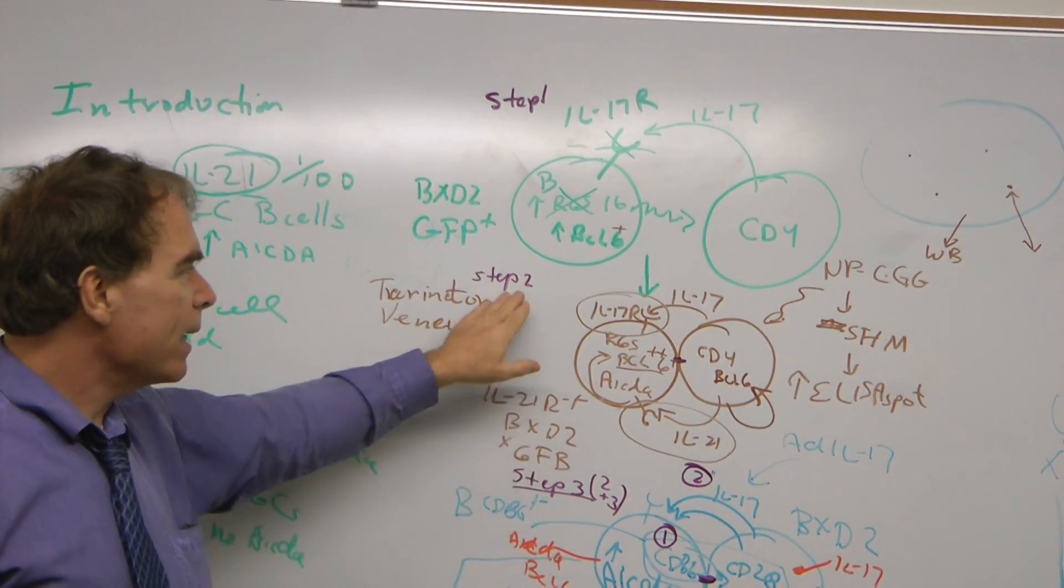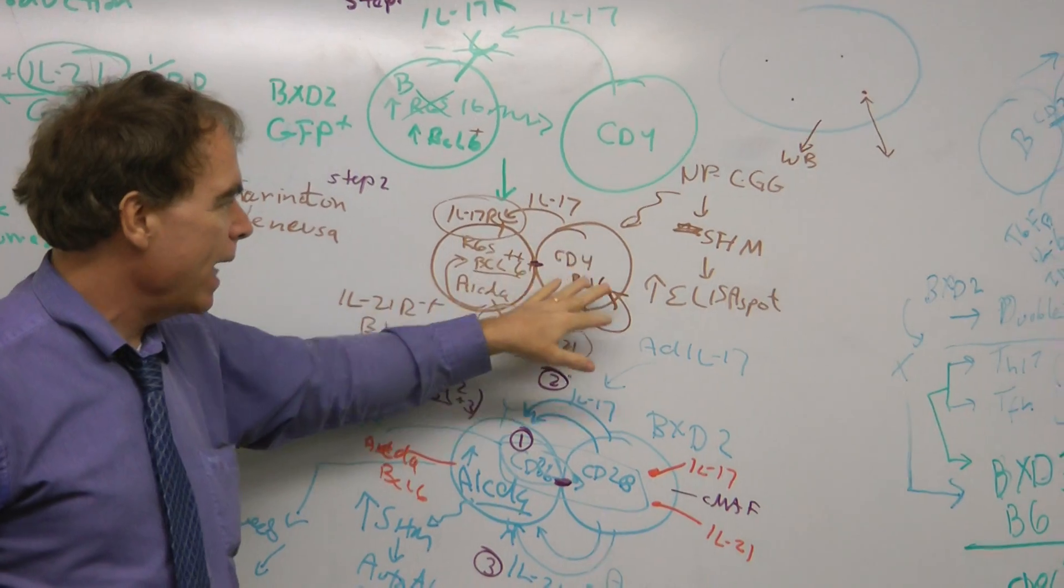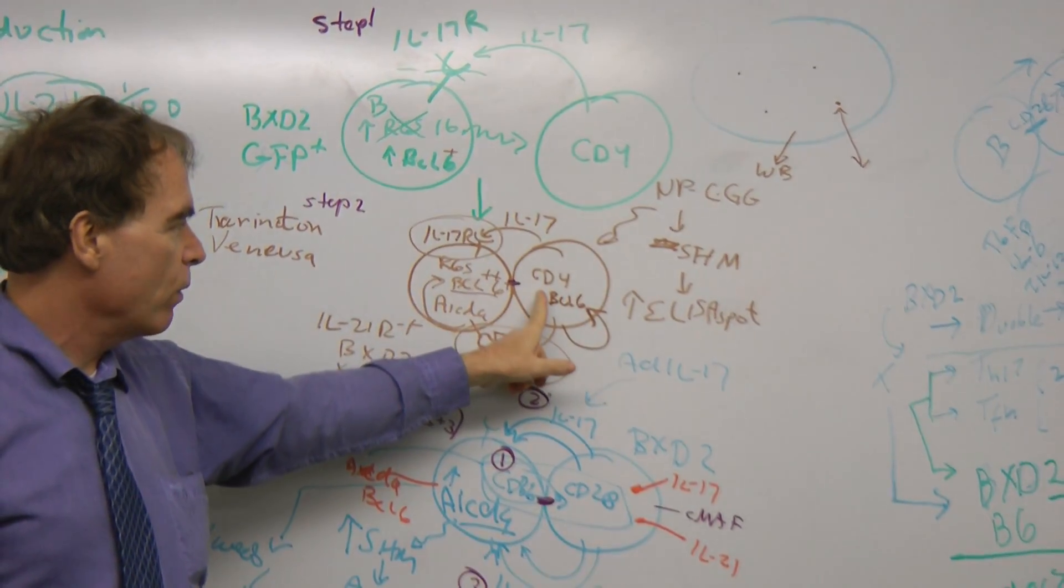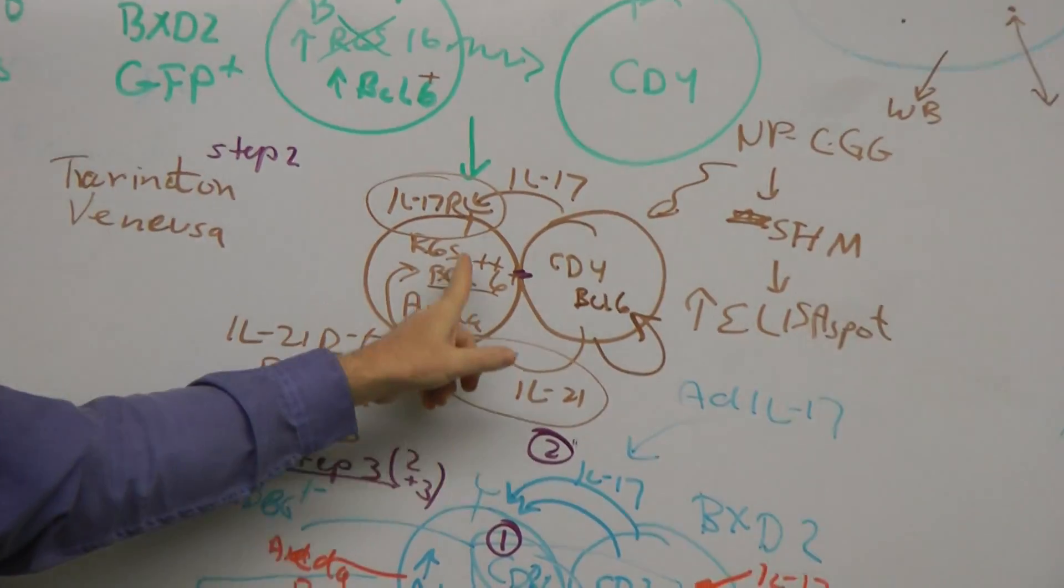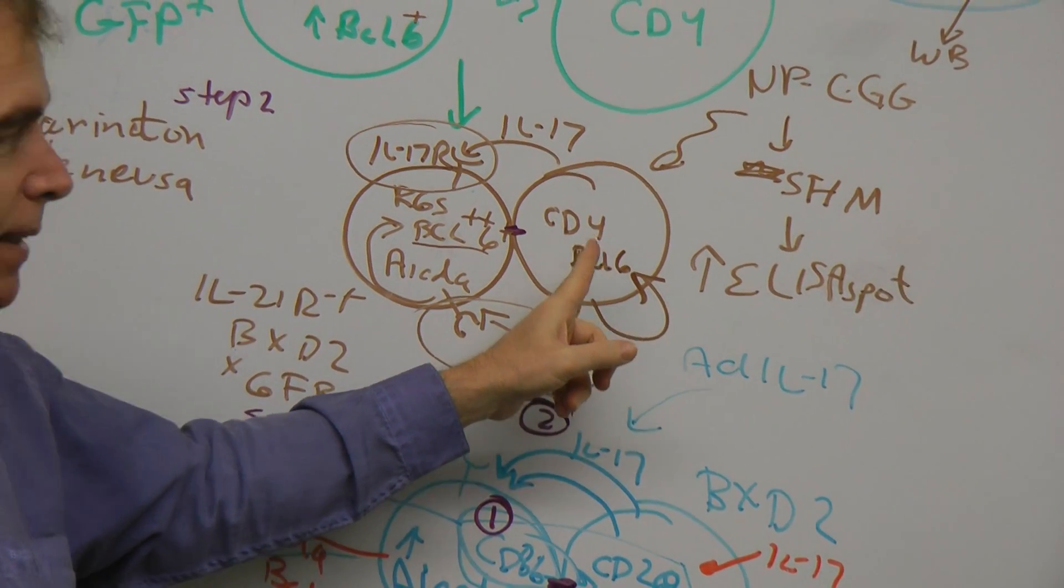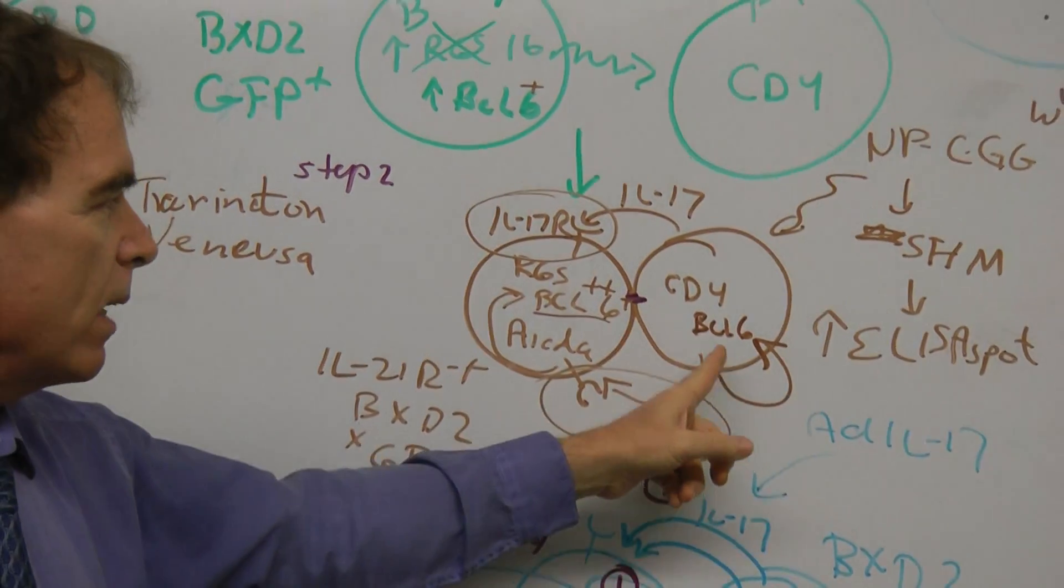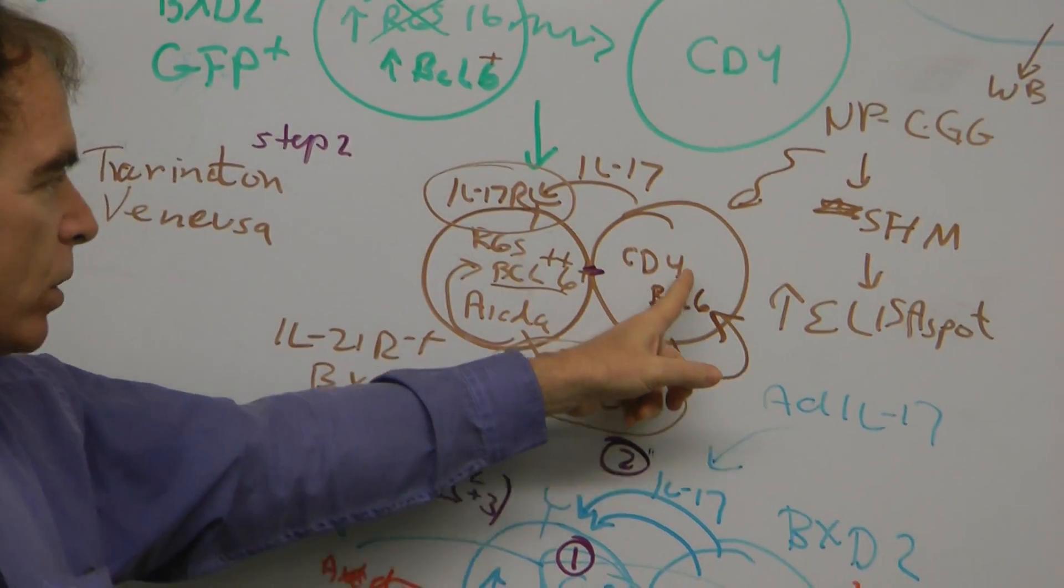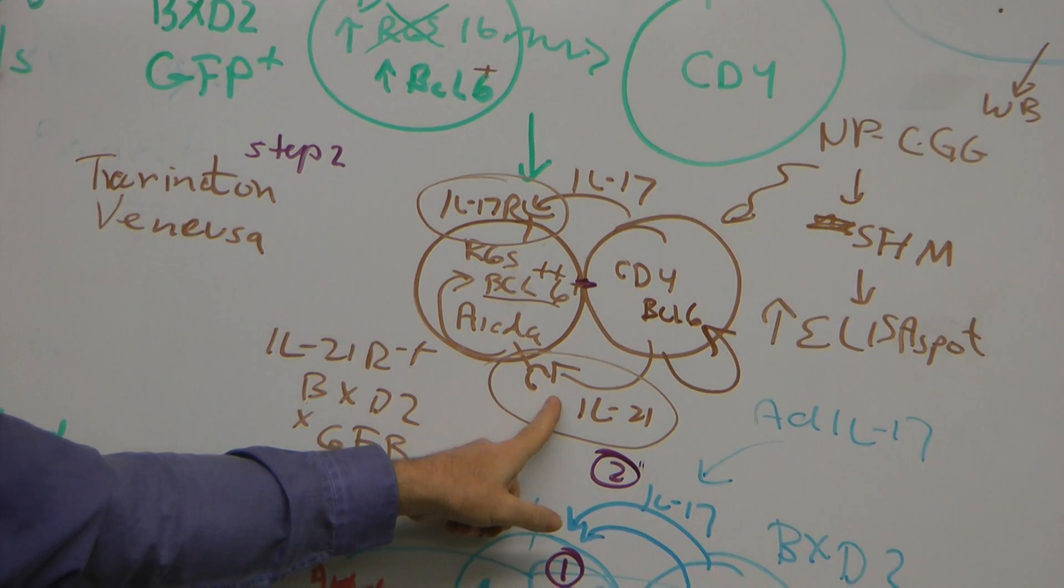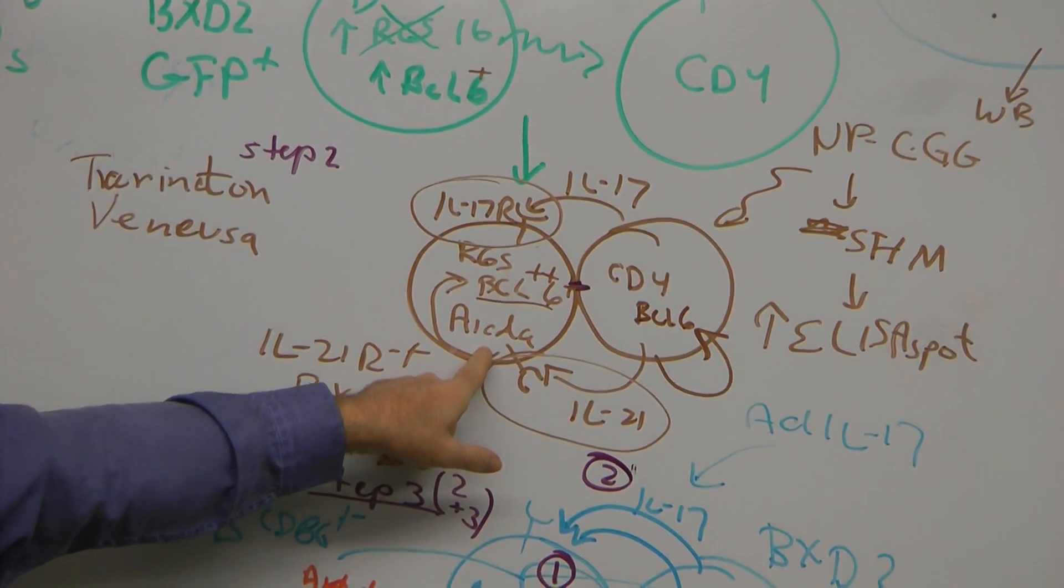The second step you see here: now that the B cells are able to touch and interact more with the CD4 T cells because of this RGS, the second cytokine comes into play by the CD4 T cell. Maybe the same T cell, maybe a different one. That's the question. But IL-21 is now produced, acting through the IL-21 receptor, and we think that regulates AID.